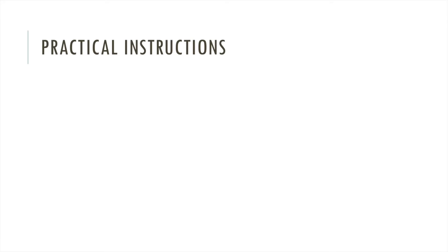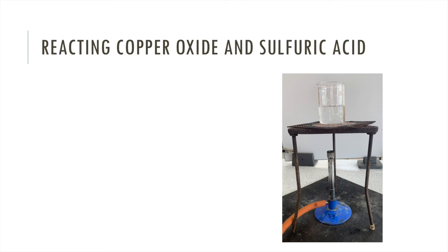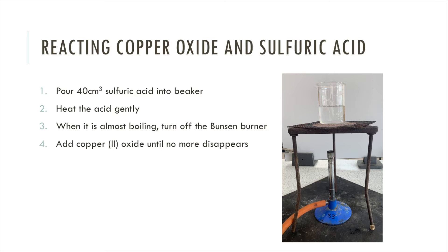So there are three main steps to this practical. Step one, we react the copper oxide and sulfuric acid. Then there's a filtration step. And finally, you have evaporation, and that's where the crystals start to form. So looking at step one, you're going to set up your apparatus like this. Step one involves pouring 40 centimeters cubed of sulfuric acid into the beaker. You heat the acid gently using this setup, so you've got a Bunsen burner on a roaring flame. When it's almost boiling, that's when you turn off the Bunsen burner. You don't let it boil rapidly. Then you add your copper oxide until it no longer disappears and you allow it to cool.